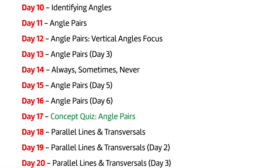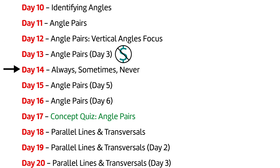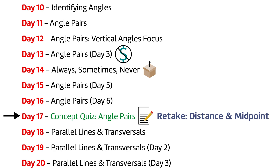After day nine, we continued to learn about the next concept on our checklist, and after a few classes, we had another free chance on day thirteen. Then, as usual, we had a warm-up on day fourteen about the common mistakes from the free chance. In addition, we unpacked the upcoming quiz over angle pairs. Then on day seventeen, we had our angle pairs quiz. After students finished the quiz, I gave the retake for distance and midpoint to every student. Based on our retake policy, this was the first opportunity for students to retake the quiz.